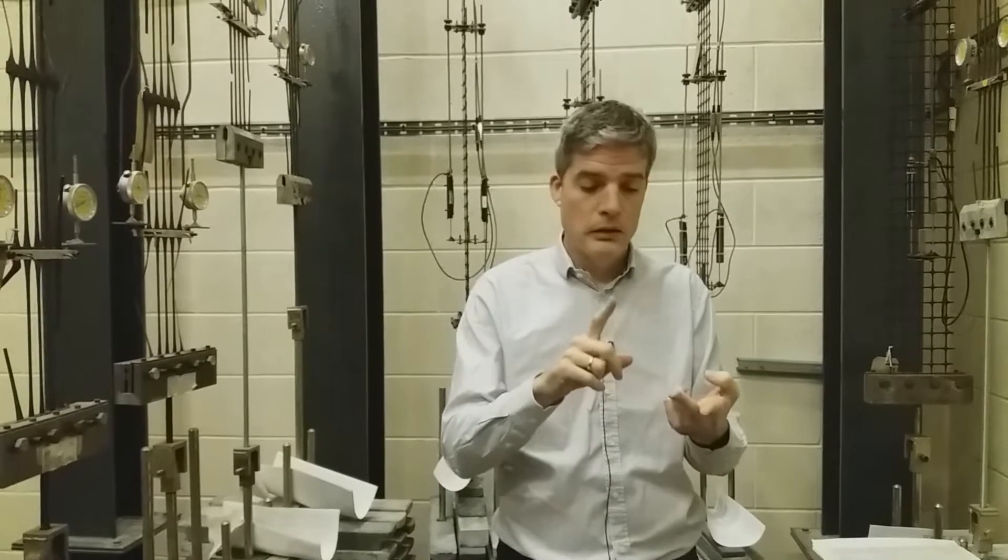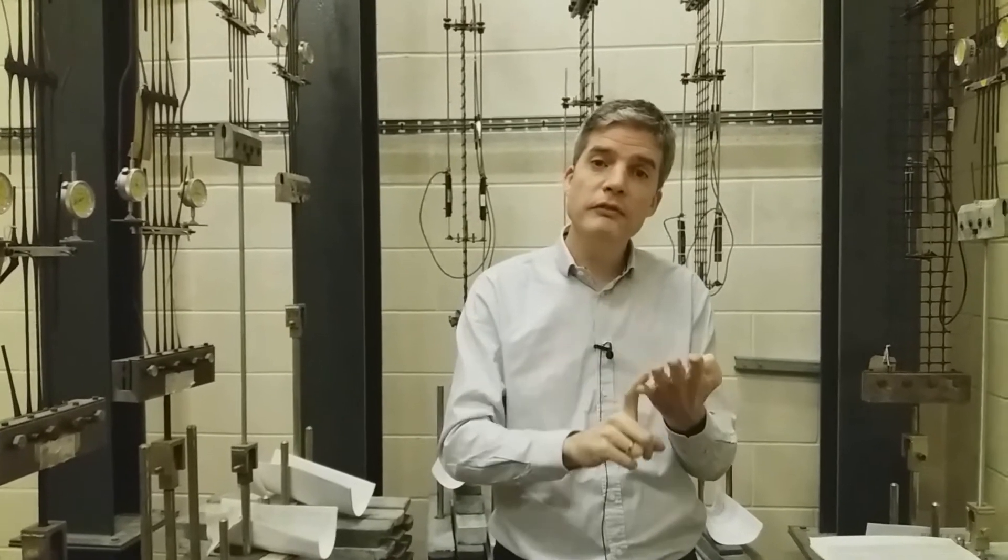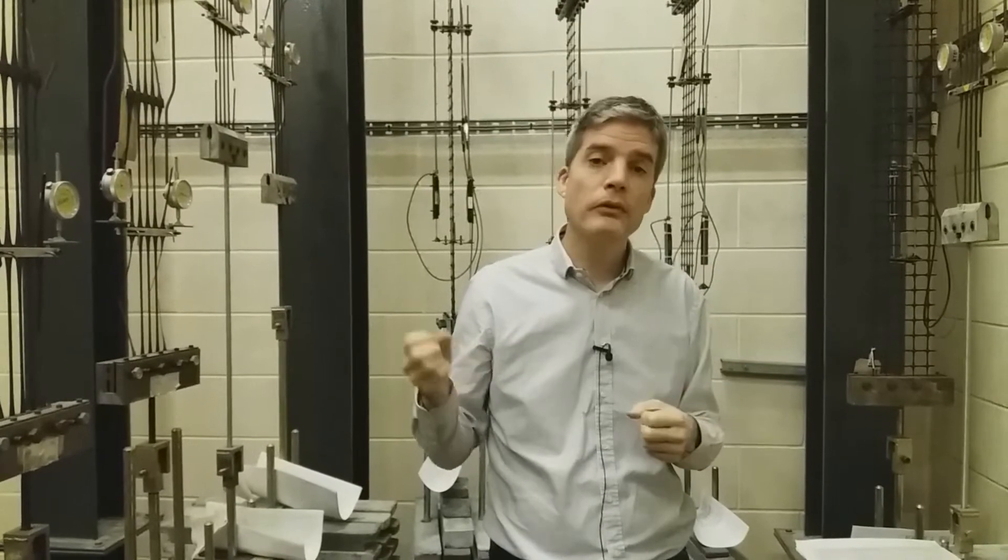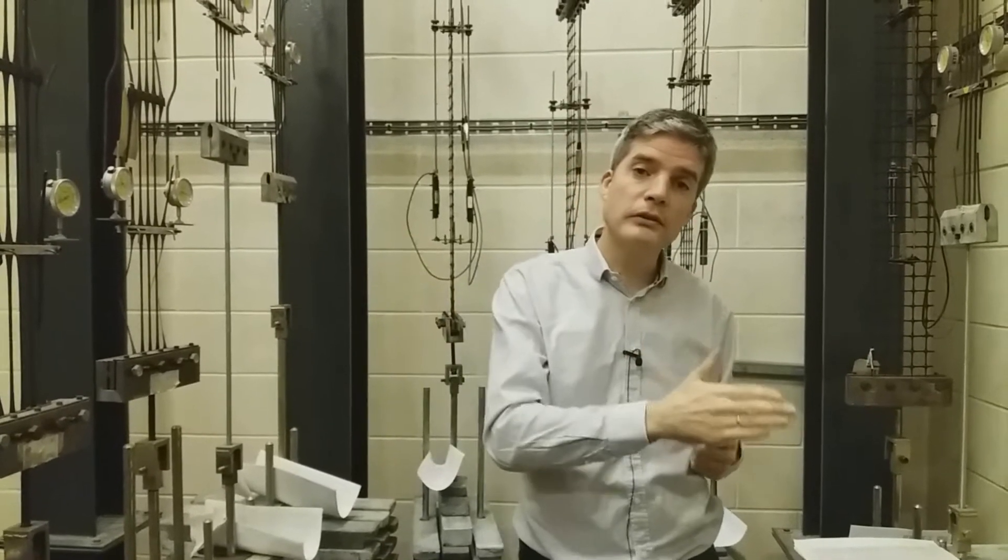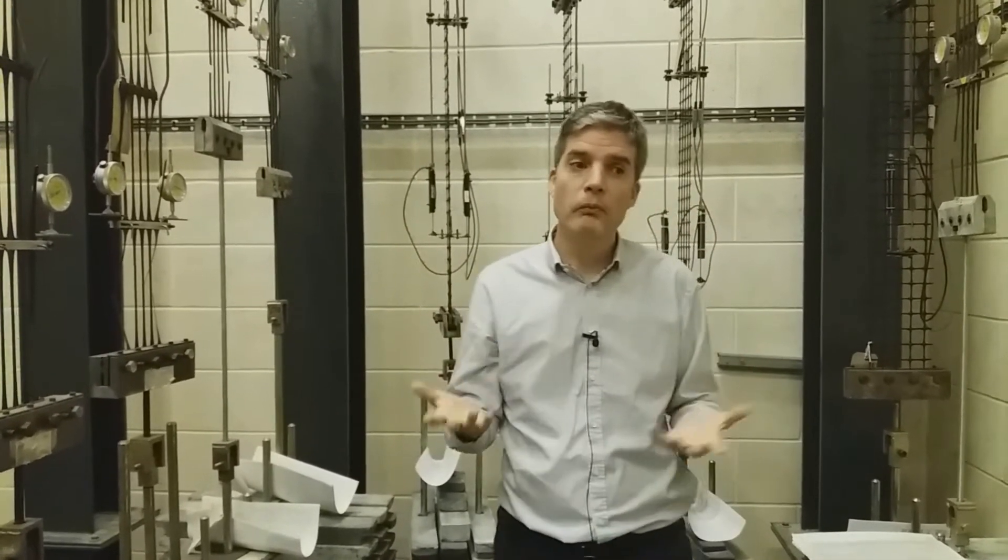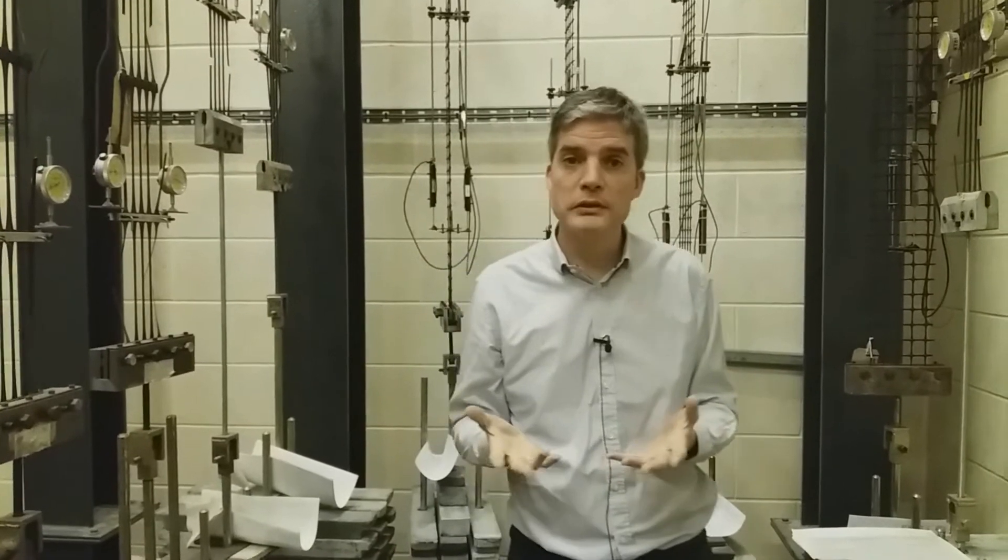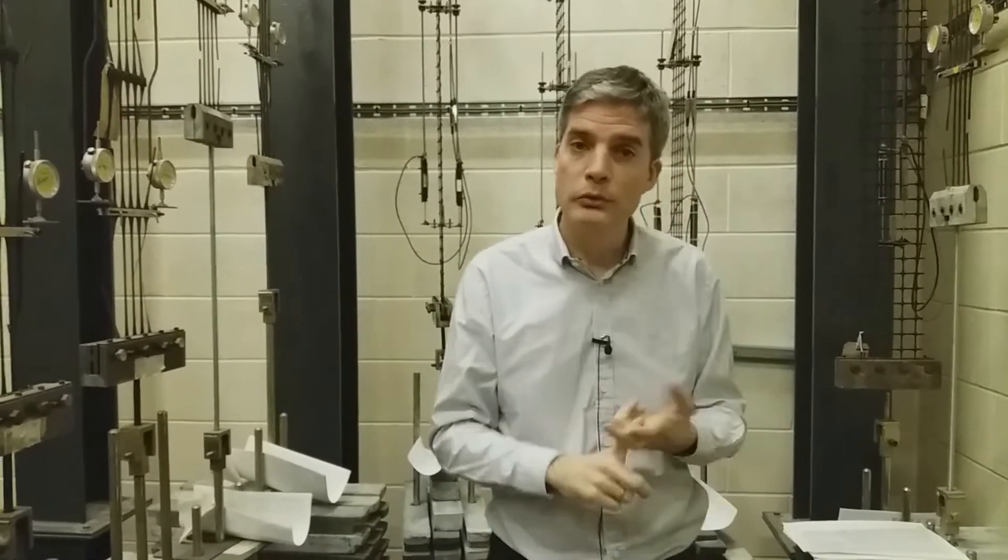So we actually have labs here. This one is 20 degrees, we also have a 10 degree, 30, 40 and 50 degrees Celsius lab. So why right up to 50? Well, then the geogrids do creep more quickly at 50 degrees C. So we can then use shift factors to go back to normal temperatures experienced by the grid in service, such as 20 degrees or 10 degrees.